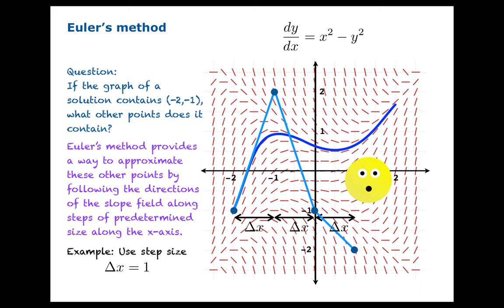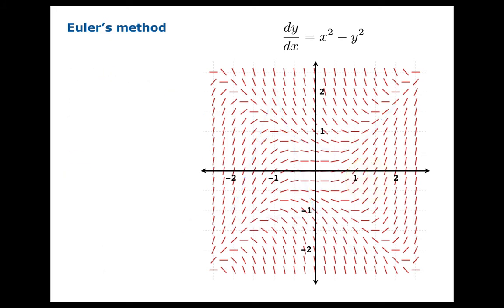But the problem is we used too large a step size. So let's redo this example with step size equal to a half. We start at the point negative 2, negative 1, move along this line. But this time, we're only going to move one half unit along the horizon. We'll take the new slope and repeat the process.